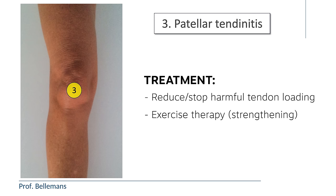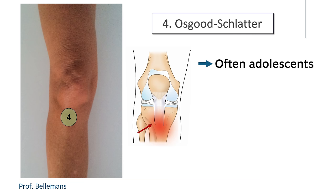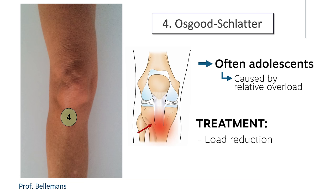4. Osgood-Schlatter. In Osgood-Schlatter, the pain is located at the insertion of the patellar tendon onto the shin bone. This often occurs in adolescence and is caused by relative overload, but it can also be a problem later in life. The treatment is load reduction and physiotherapy for most cases.